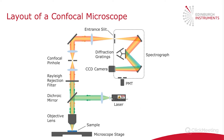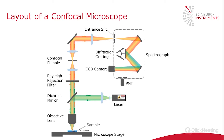Starting with the excitation source, which is nearly always a laser. The laser comes in and is then reflected off a dichroic mirror and down towards the objective lens. This focuses the beam onto the sample.